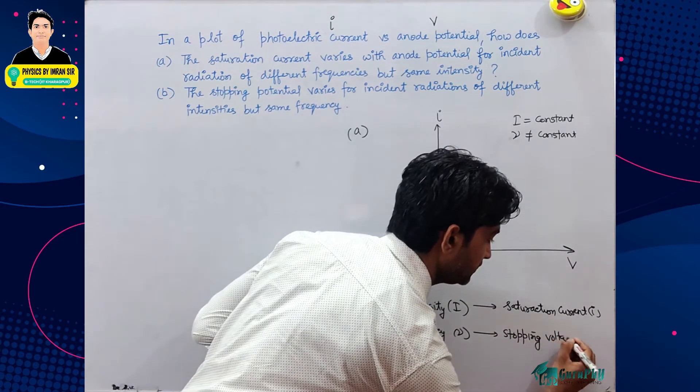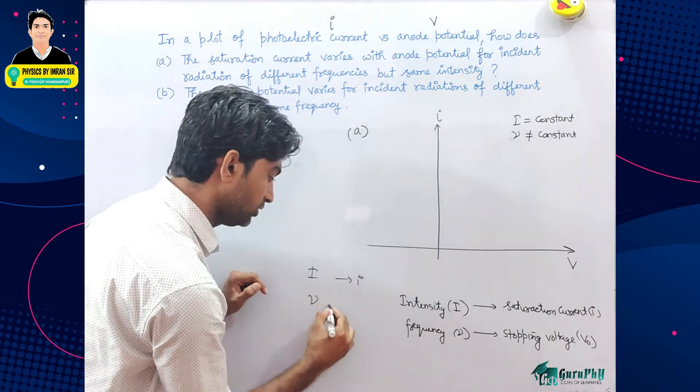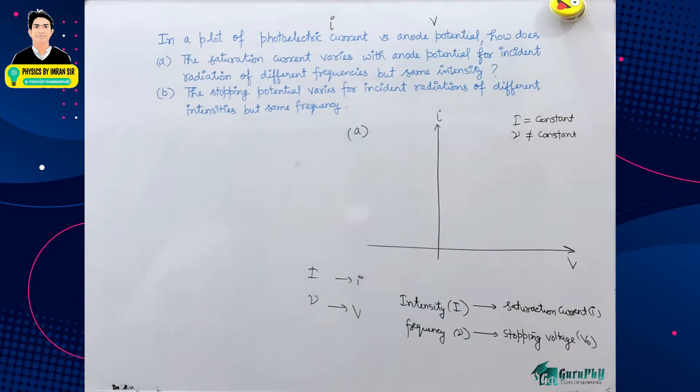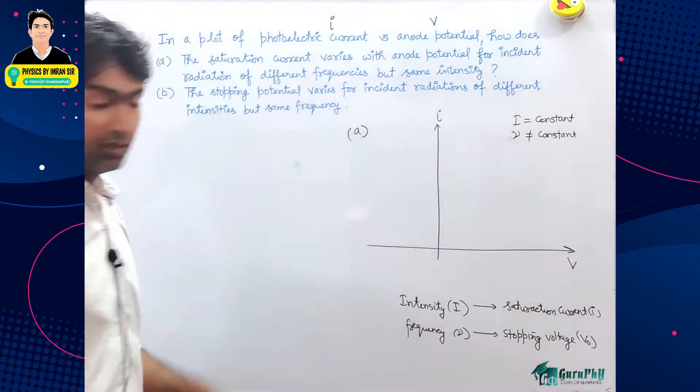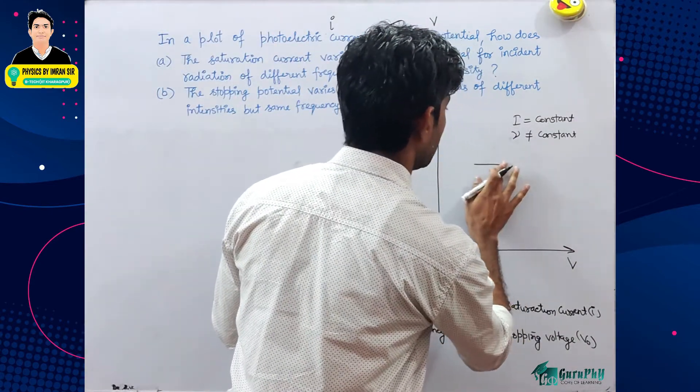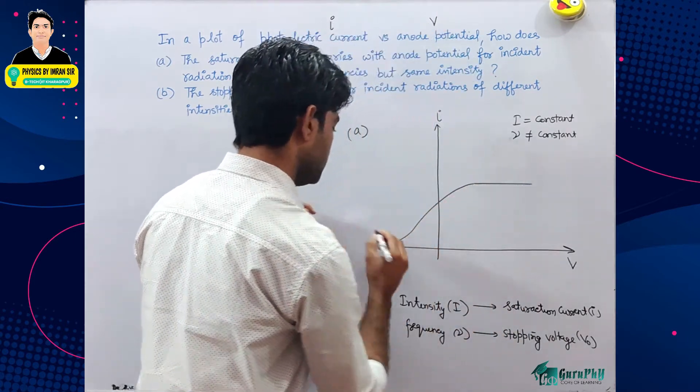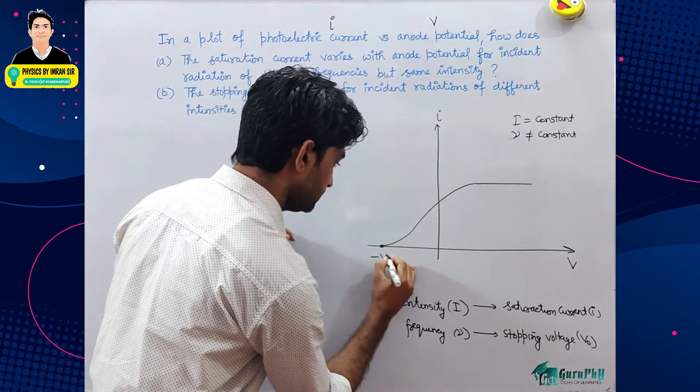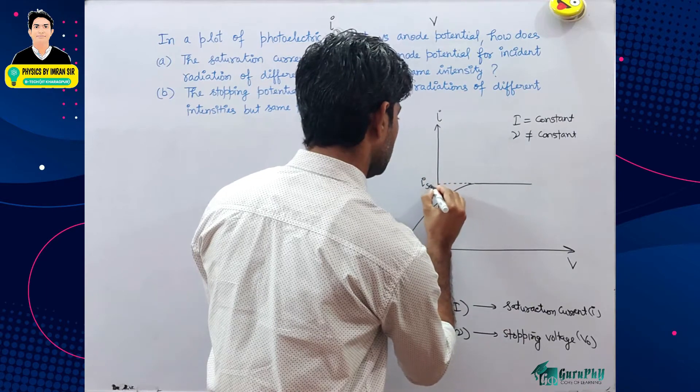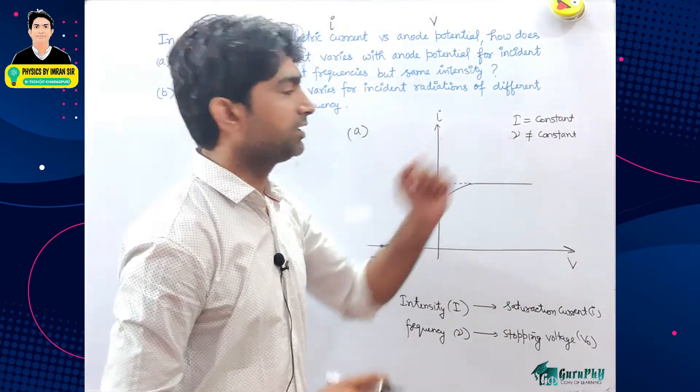Stopping voltage I, I ko aur nu ko ek jaisa dekhne mein lag raha hai. Ab jo graph hota hai current versus voltage ka kuch aisa hota hai - yahan saturation current constant current aur idhar stopping voltage minus V naught, yeh saturation current ki I hai.